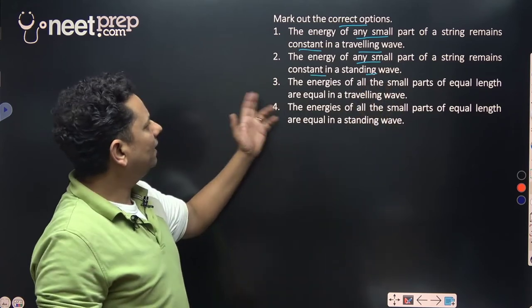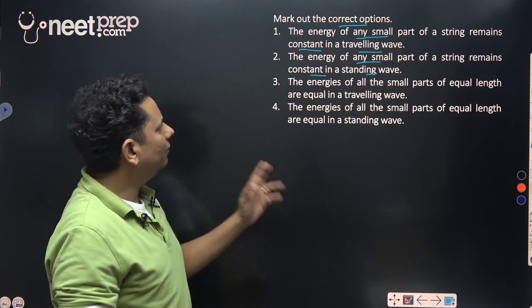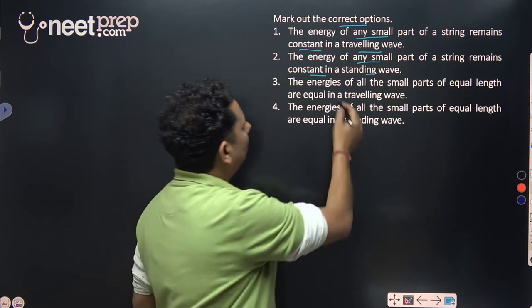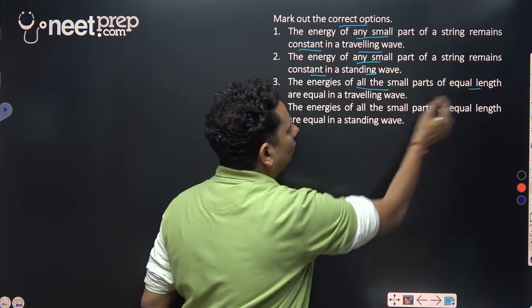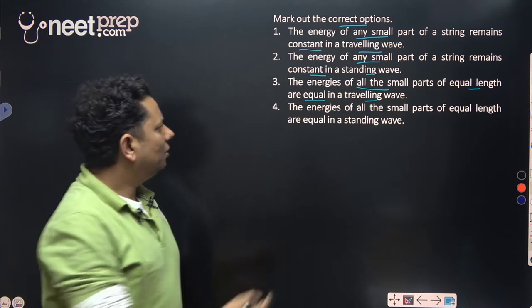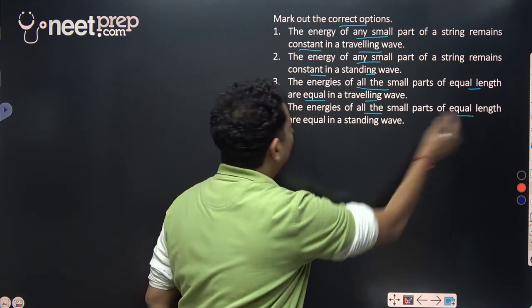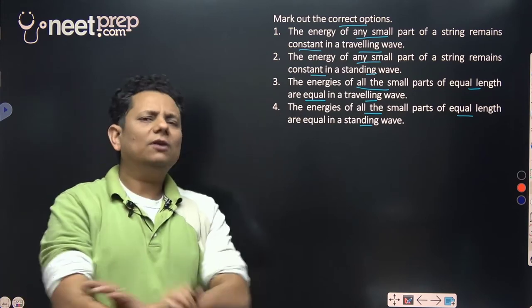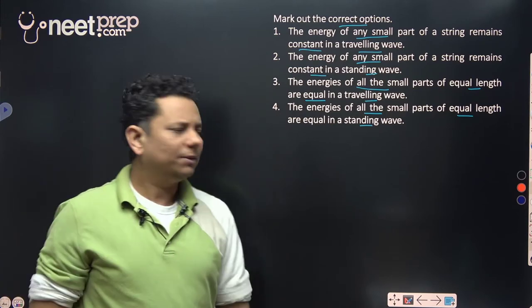Third, the energies of all the small parts of equal length are equal in a traveling wave. Fourth, the energies of all the small parts of equal length are equal in a standing wave. Now this is a conceptual question, so let me clear some basics.